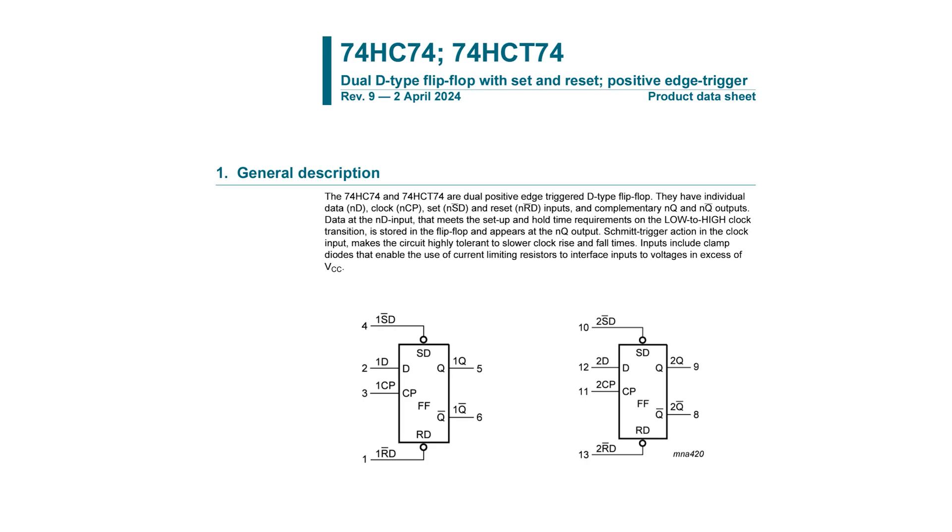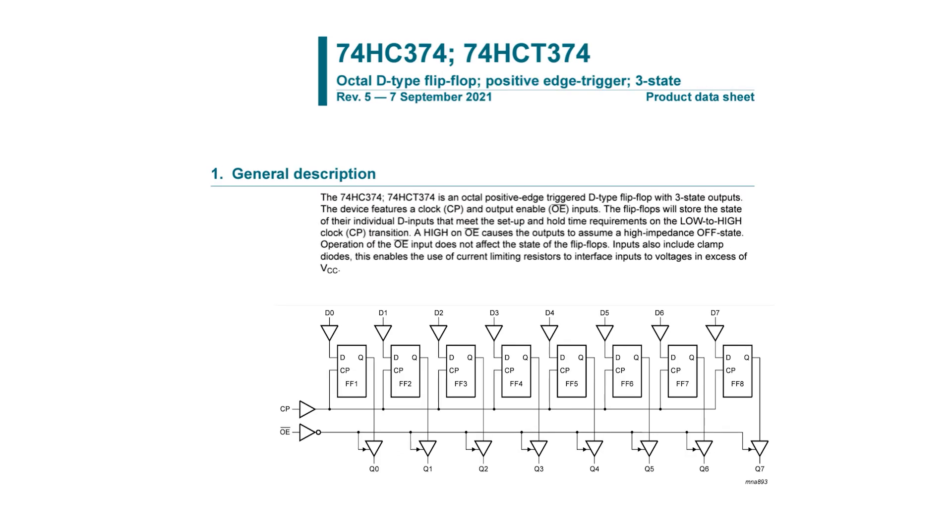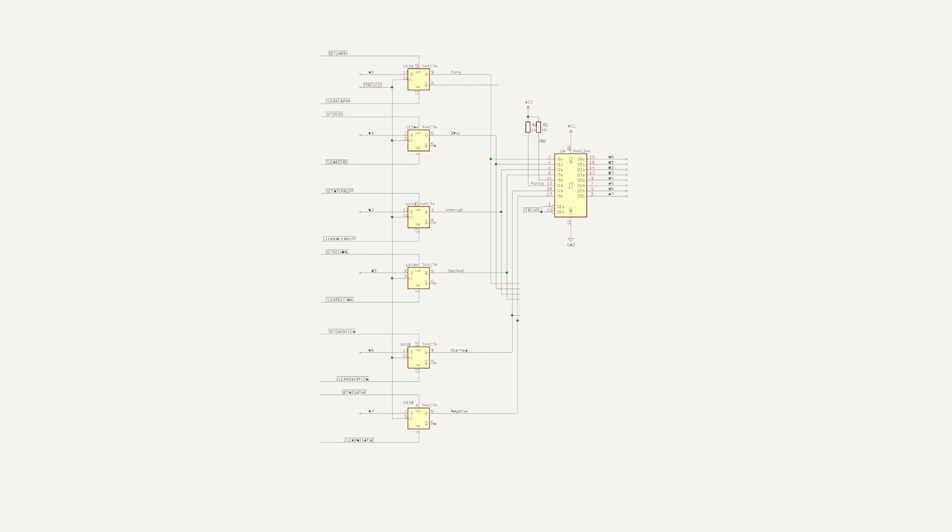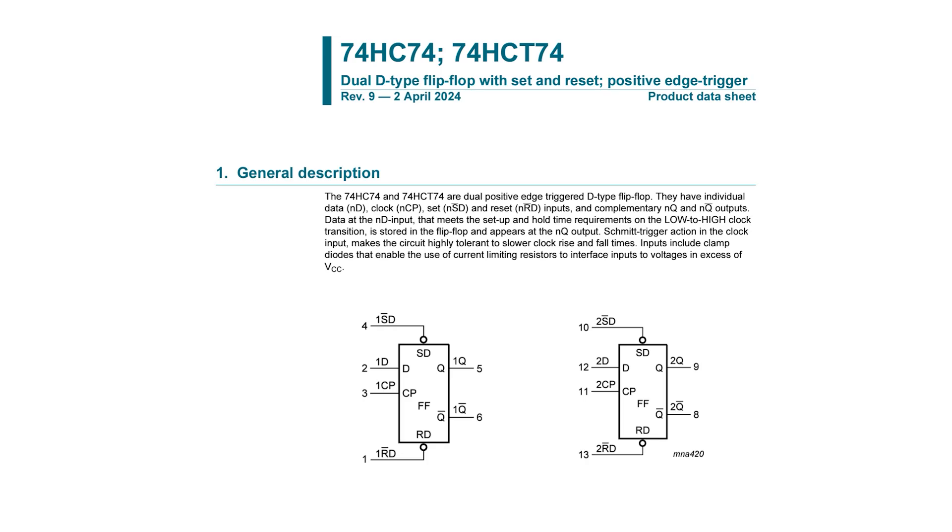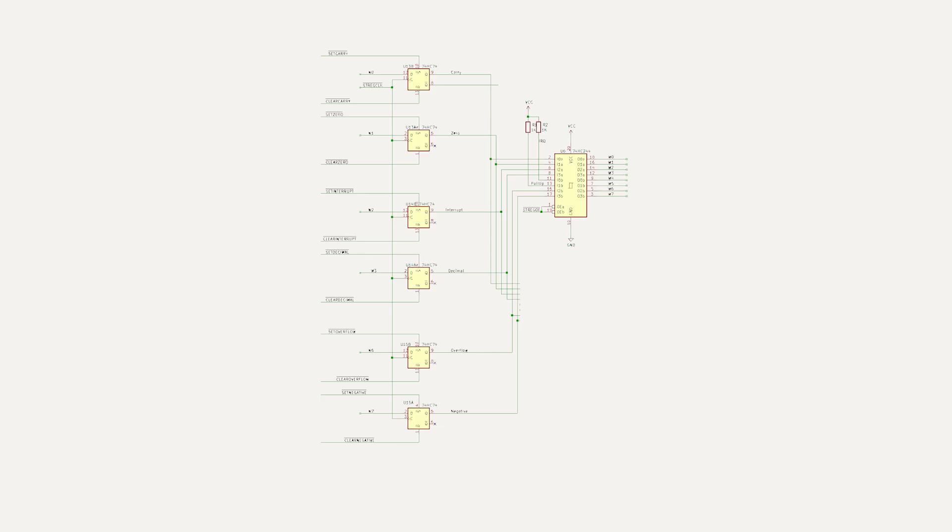But why use individual flip-flops? Why not just use an octal D-type flip-flop like the 74HC374? Well, there are a number of instructions that can individually set and clear these flags, such as set decimal and clear decimal, so I want the ability to individually set and clear the flip-flops independently. Each of the flip-flops in the 74HC74 has a D input, a clock, but they also have a preset bar and clear bar input, which can asynchronously set or clear each flip-flop bit independently from all the other flip-flop bits.